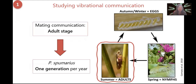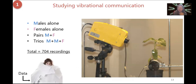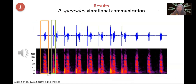When studying the vibrational communication of an insect, we can perform experiments during the adult stage. In the case of Philaenus spumarius, which has only one generation per year, we study vibrational communication during summer — the insect overwinters as eggs, nymphs hatch in spring, and adults emerge in summer. During summer, I performed vibrational bioassays with males, females placed alone on plants, pairs, and trios. In total, I collected more than 700 recordings — a lot of data. After analyzing all those data, I could characterize the vibrational communication of Philaenus spumarius.